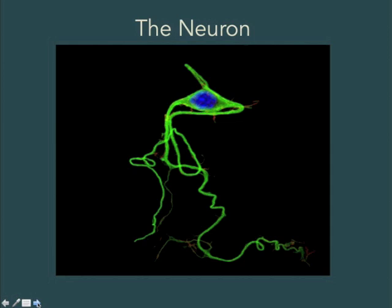One of the really unique properties of neurons is their ability to adjust their sensitivity depending upon the pattern and intensity of the signals that they're receiving. This turns out to be very, very important for a number of molecular processes, and these changes in the neuron and in neural networks underlie some of the most important observations about sensitization and tolerance of function in human beings.